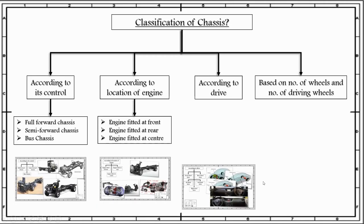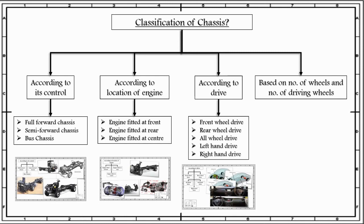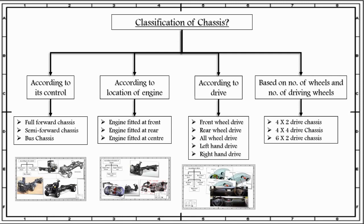Going back towards the classification of chassis, we have now discussed according to the drive — front-wheel drive, rear-wheel drive, all-wheel drive, left-hand drive, and right-hand drive. The last classification of chassis is based on number of wheels and number of driving wheels. Chassis can be classified based on 4x2 drive, where the number of wheels is 4 and the power is given to 2 wheels. In 4x4 drive, there are 4 wheels and power is given to all of the wheels. The third category is 6x2, where the vehicle has 6 wheels and the drive power is given to 2 wheels only.